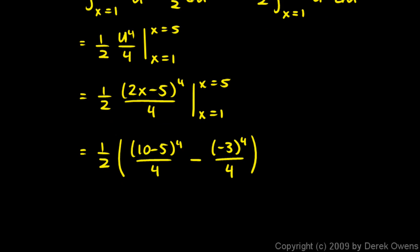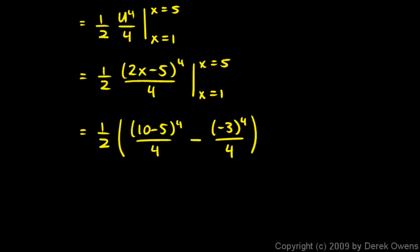So we evaluate this. This is going to be 1 half, and that works out to 5 to the fourth over 4, which comes out to 156.25. And negative 3 to the fourth over 4 comes out to 20.25. And that works out to a final answer of 68. That's our answer.